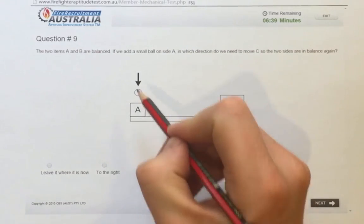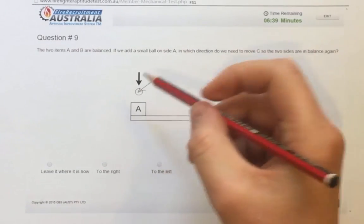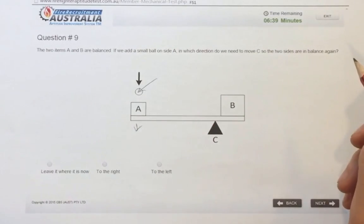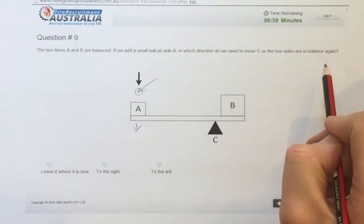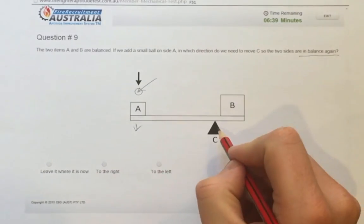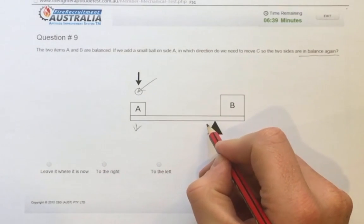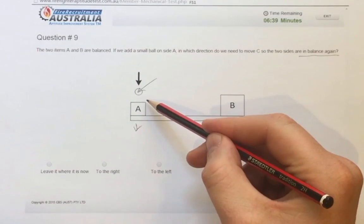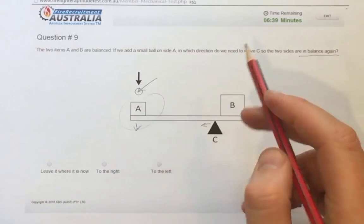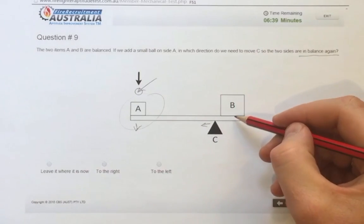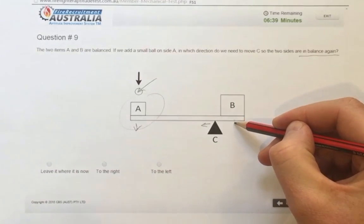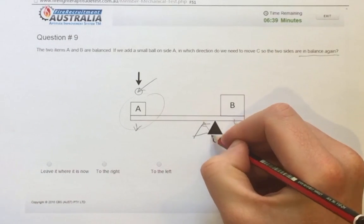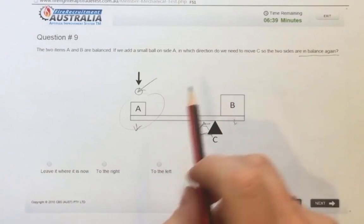that means adding extra weight of the ball is going to tip it this way. So to keep it balanced or to balance it again, we're going to have to move C slightly down this way to compensate for the extra weight on this end so that B has a little bit more leverage down this end. So we'd have to move to the left slightly to compensate for that.